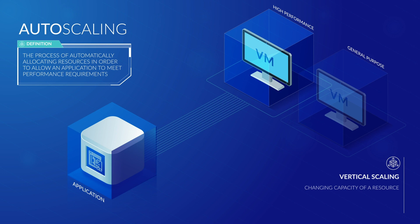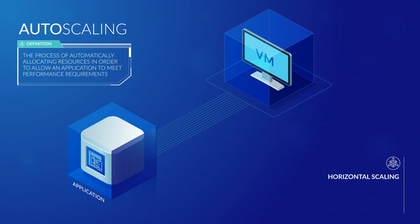Vertical scaling, as a rule of thumb, generally requires that a system experience some amount of downtime while the system is being redeployed with the upgraded resources. As such, vertical scaling is not typically automated. Horizontal scaling is referred to as scaling out and in, which typically refers to the addition or removal of instances of a resource or application.